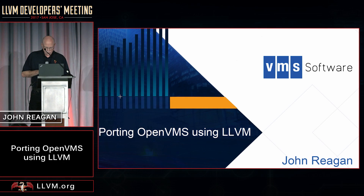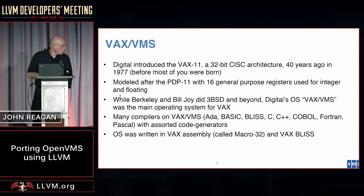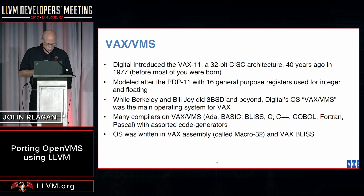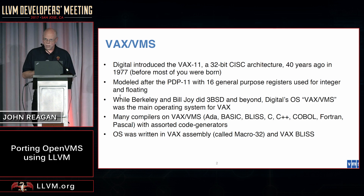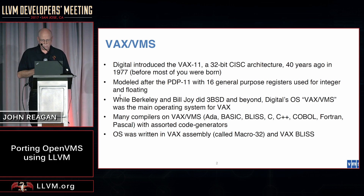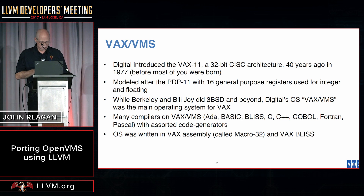40 years ago next week, before most of you were born, Digital Equipment Corporation introduced the VAX 32-bit architecture. While Berkeley was moving BSD Unix from PDP-11 to the VAX, Digital had its own operating system called VMS. VAX VMS eventually ended up with many compilers: ADA, BLISS, C, C++, COBOL, FORTRAN. BLISS is the Digital system implementation language. The operating system was written mostly in VAX assembly and in BLISS.